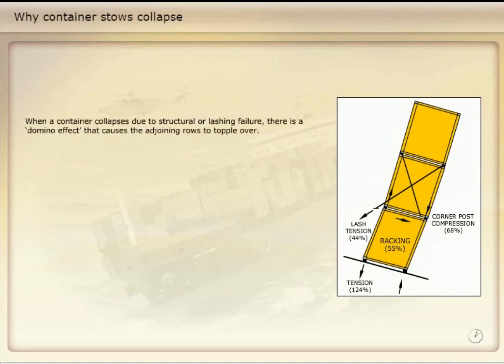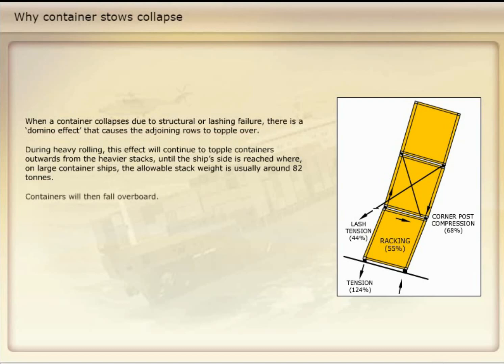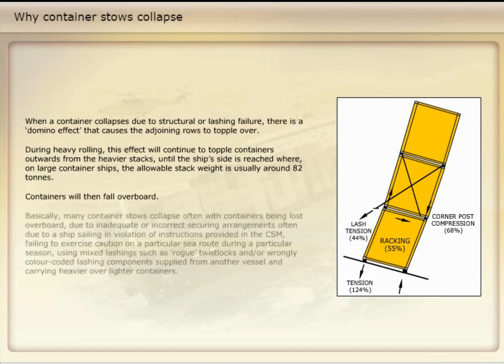When a container collapses due to structural or lashing failure, there is a domino effect that causes the adjoining rows to topple over. During heavy rolling, this effect will continue to topple containers outwards from the heavier stacks until the ship's side is reached where, on large container ships, the allowable stack weight is usually around 82 tonnes. Containers will then fall overboard.